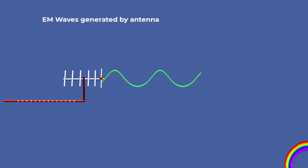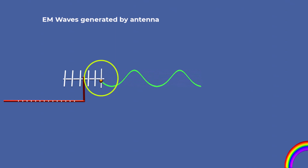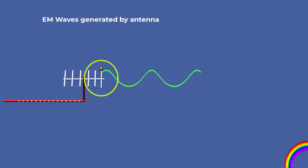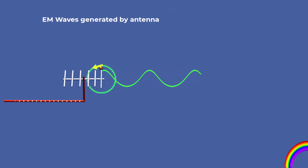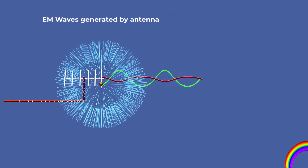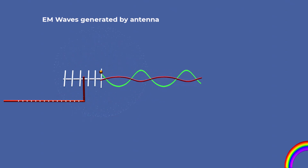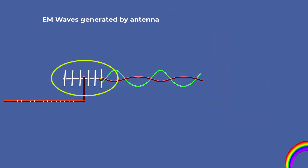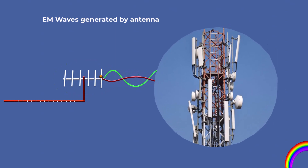For example, when an electron oscillates back and forth in an antenna, it continuously accelerates and decelerates. This oscillation creates a changing electric field, which induces a changing magnetic field, leading to the emission of electromagnetic radiation. This principle is used in radio transmitters, TV antennas, and mobile phone towers.